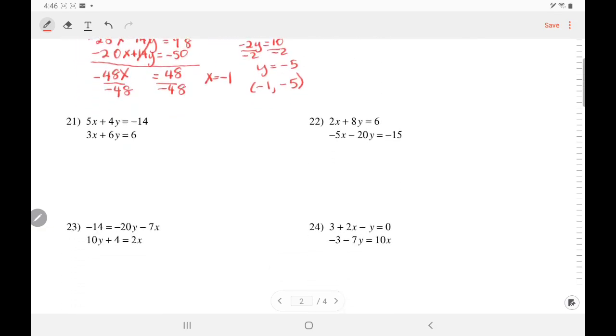Let's try number 21. Let's say we want to eliminate the x's. The common multiple of 5 and 3 is 15. So I will need to multiply the first equation by 3 and the second equation I will multiply by negative 5 so that they will become opposites. So distribute, that would give me 15x plus 12y equals negative 42.